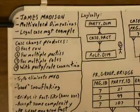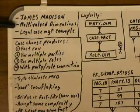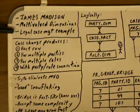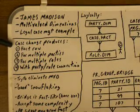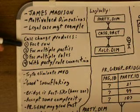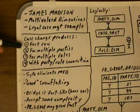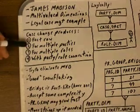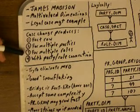My name is James Madison. I'm here to talk about multi-valued dimensions, and it pertains to a system designed to track legal cases. When a change occurs in the case, a factor is produced so that we can capture the event from the real world, and in so doing, there will be multiple parties involved in multiple roles.